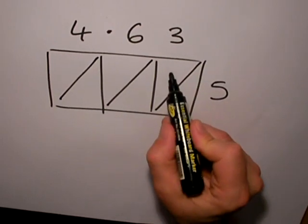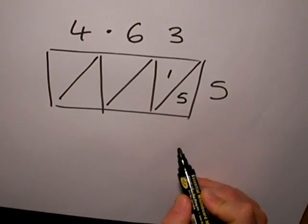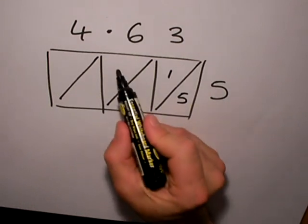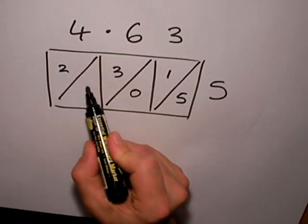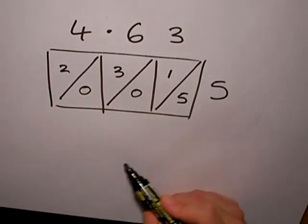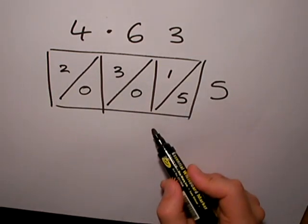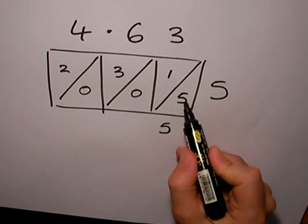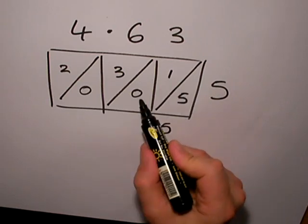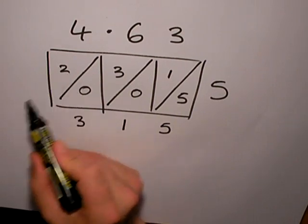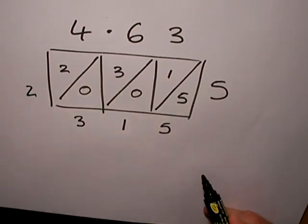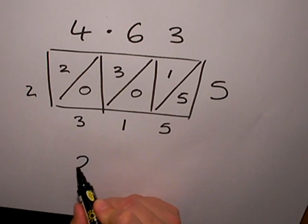Let's start multiplying. 3 times 5 is 15, 6 times 5 is 30, and 4 times 5 is 20. Now I start to add up using my diagonal lines. I've got 5 on its own, 1 and 1 and 0 is 1, 3 and 0 is 3, and around the corner I've got 2. So the answer is 2315.